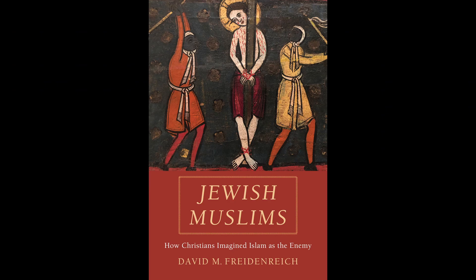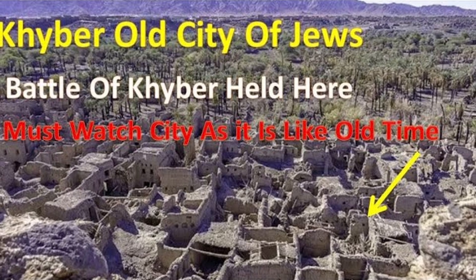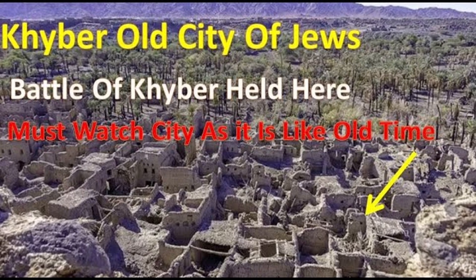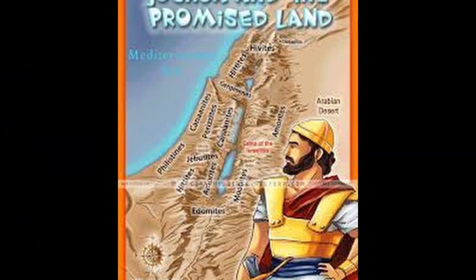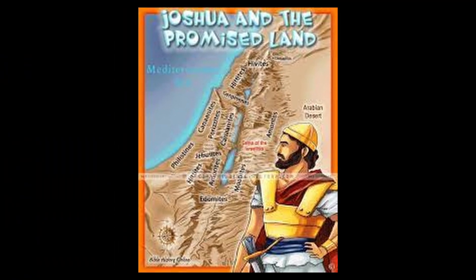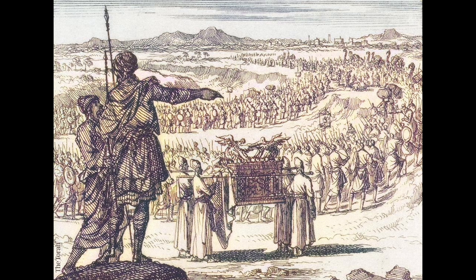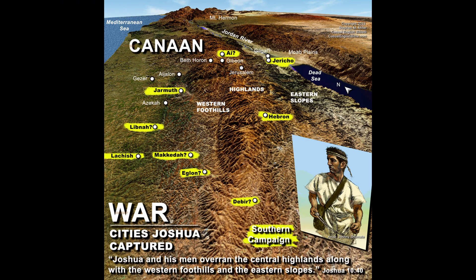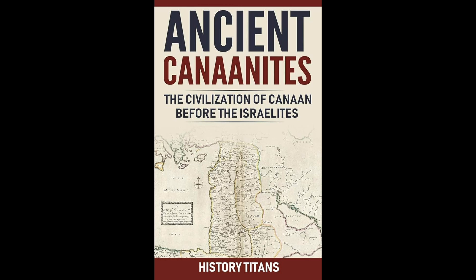4. Muslim Conquests — 7th–8th centuries CE. Throughout history there have been instances of conflict between Muslim rulers and Jewish communities, often resulting in conversions, persecution, or massacres. However, these were not systematic attempts to eradicate all Jews. 5. Canaanites and Joshua — 13th century BCE. The biblical narrative of Israelite conquest of Canaan under Joshua's leadership, which includes stories of battles, the destruction of cities, and territorial conquest. The historicity of these events is subject to scholarly debate and interpretation.